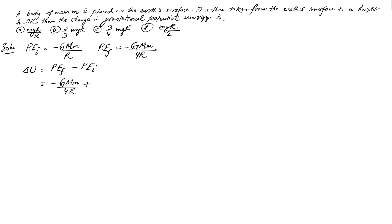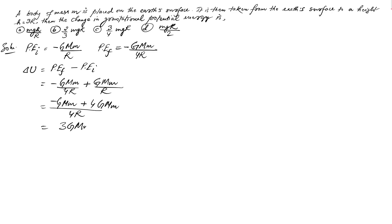Continuing the calculation: minus GMm/4R minus (minus GMm/R). The two negatives become positive, so we get minus GMm + 4GMm, which gives 3GMm/4R.